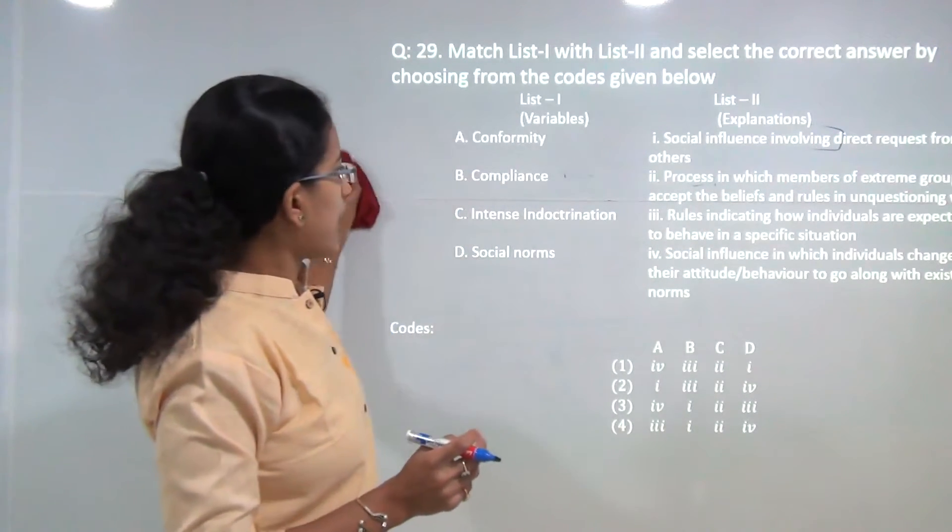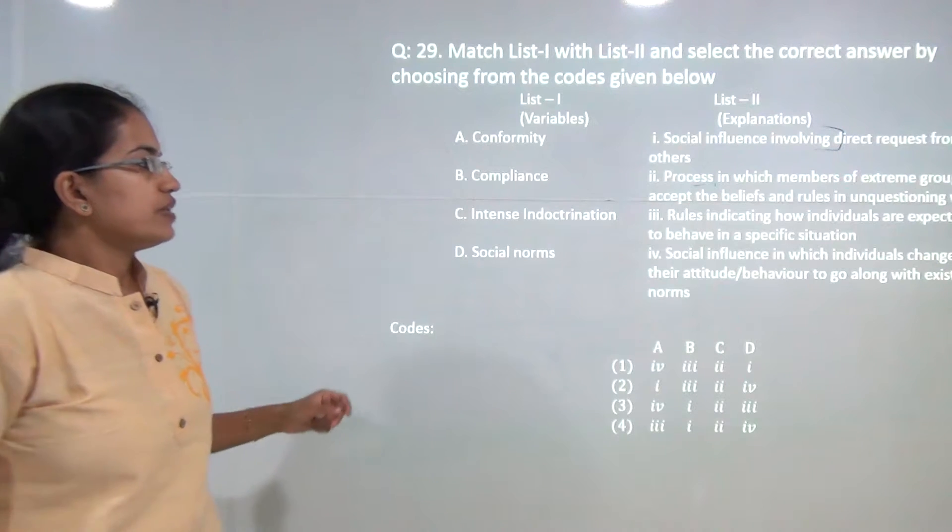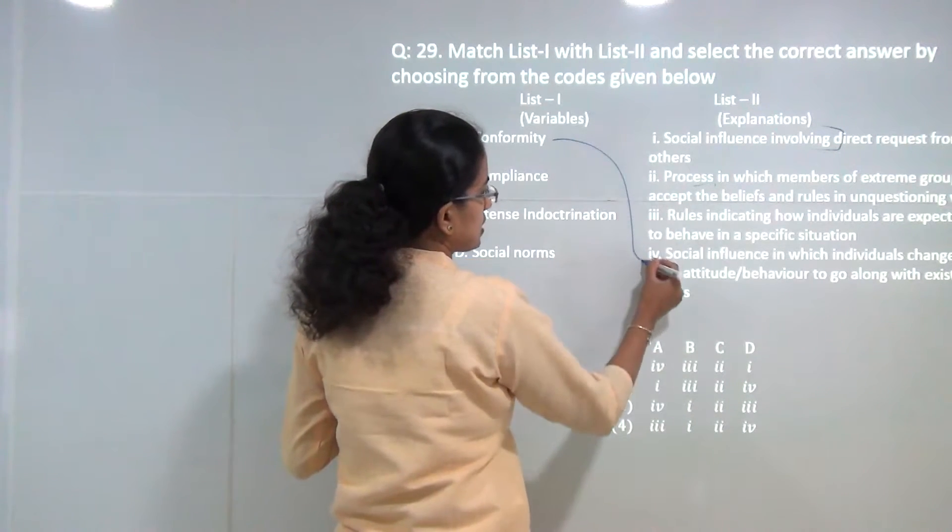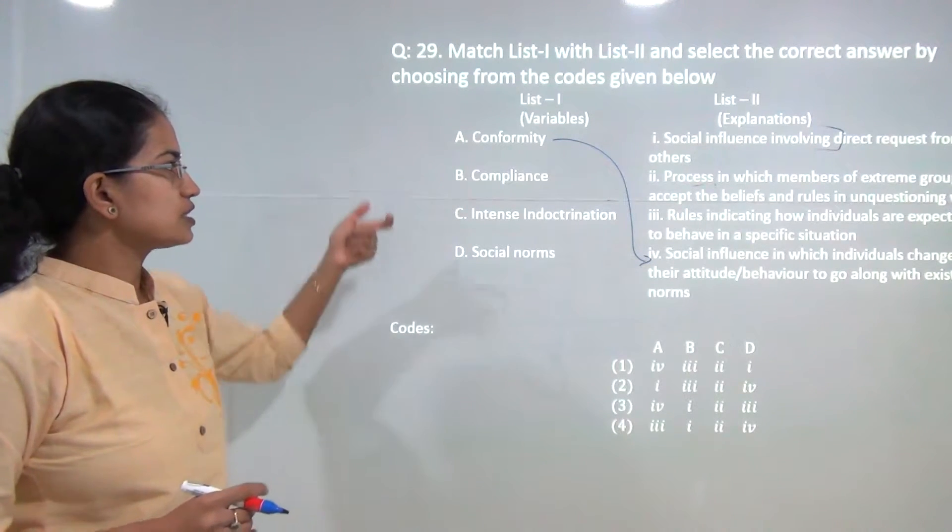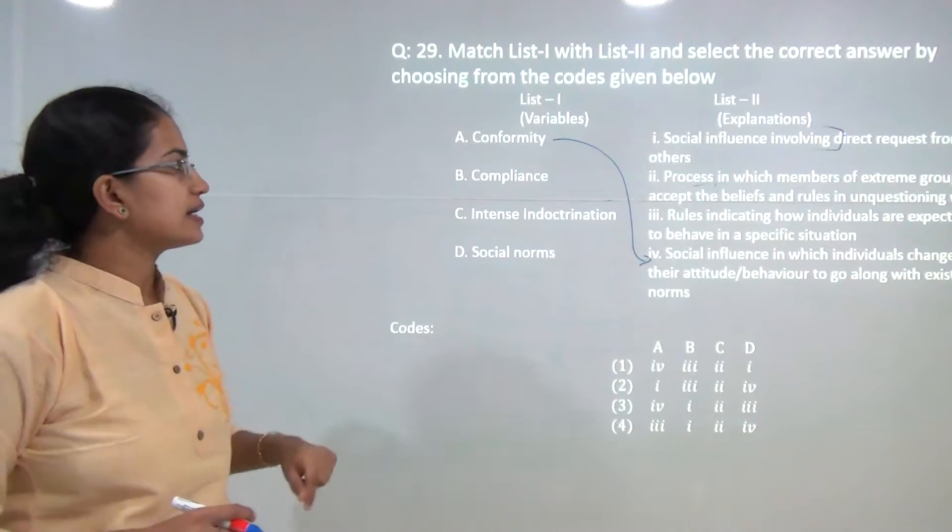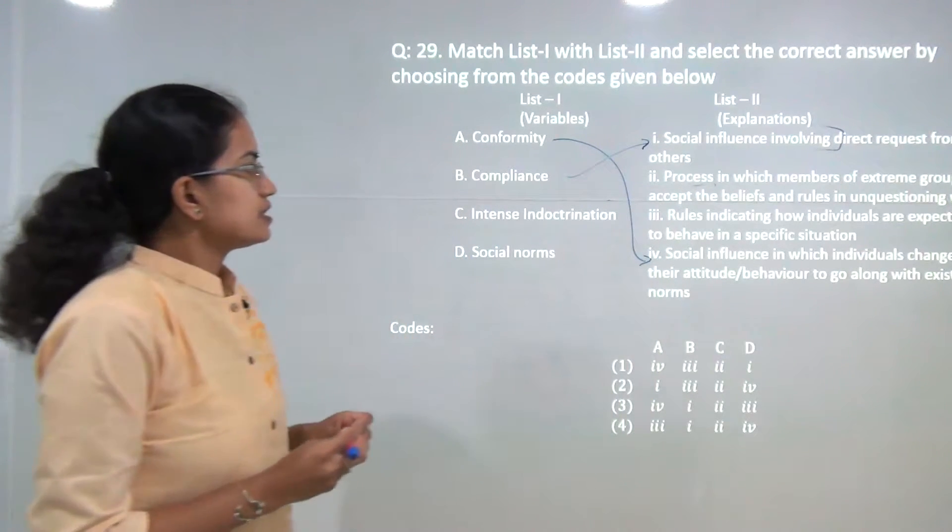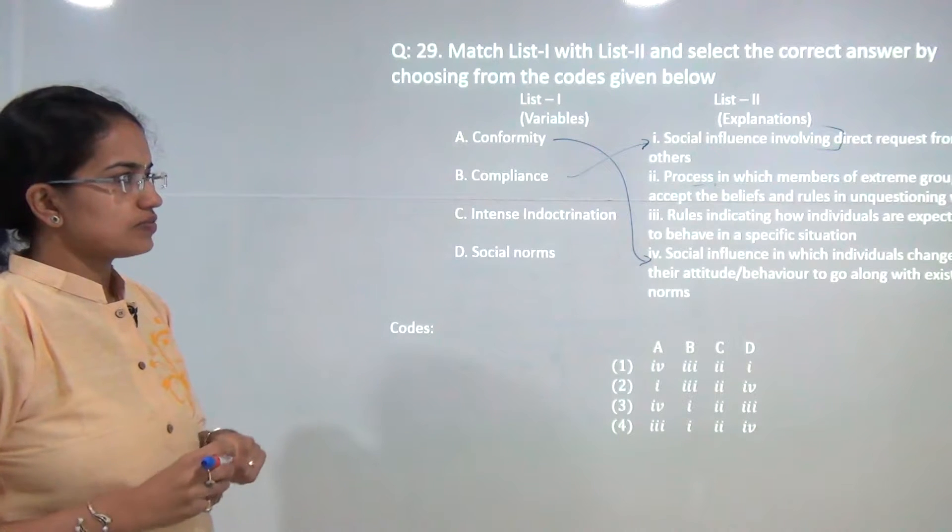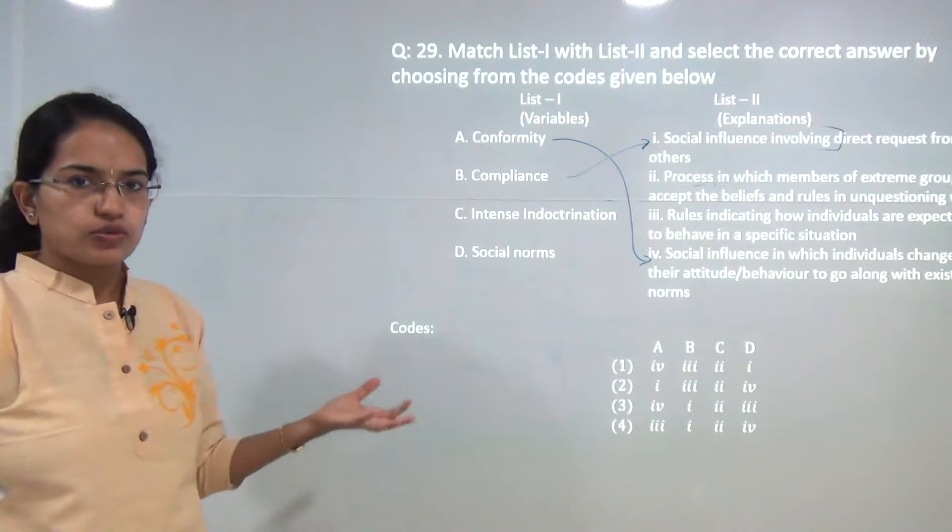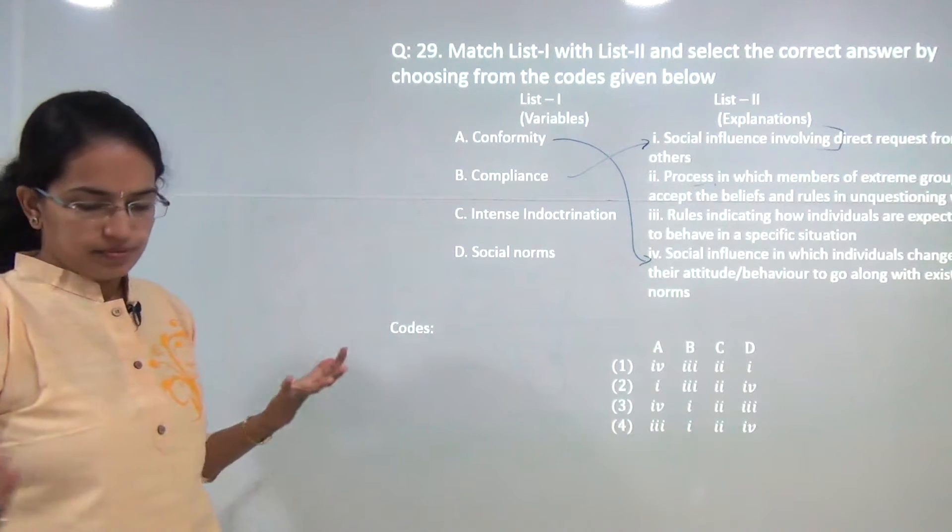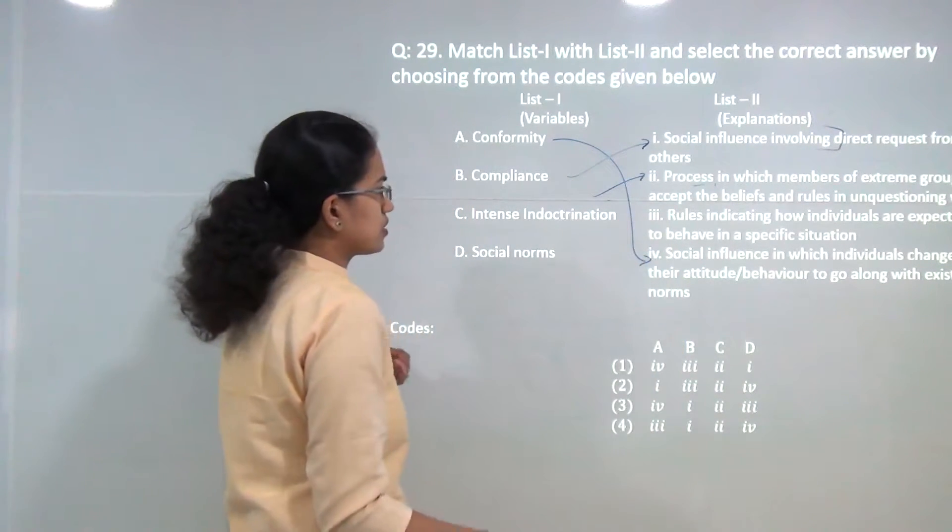Next question, you have to match the variables with their explanations. Conformity talks about the social behavior which is influenced when the individual changes their attitude to go along with the existing norms. Compliance is social influence involving direct request from others. Intense indoctrination talks about the process in which members of the extreme group accept the beliefs and the rules in an unquestioning way. So whatever is said is directly believed or directly accepted by the group.